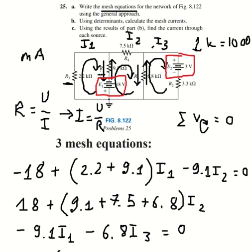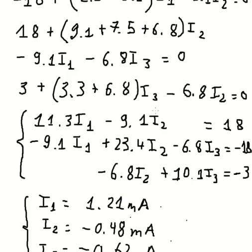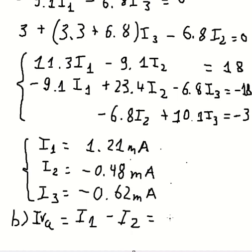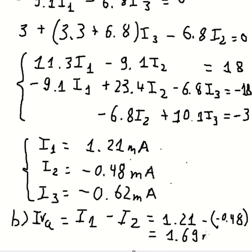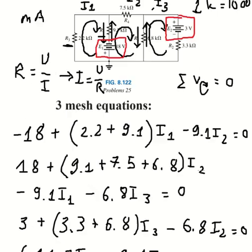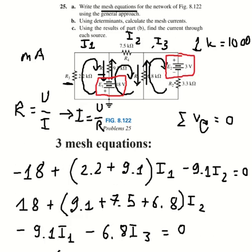Looking carefully, I number one and I number two flow in opposite directions through that branch, so the current through source Va is I1 minus I2, which equals 1.21 minus negative 0.48, giving 1.69 milli-amperes. For source Vb, looking at this branch, the current is only I number three.